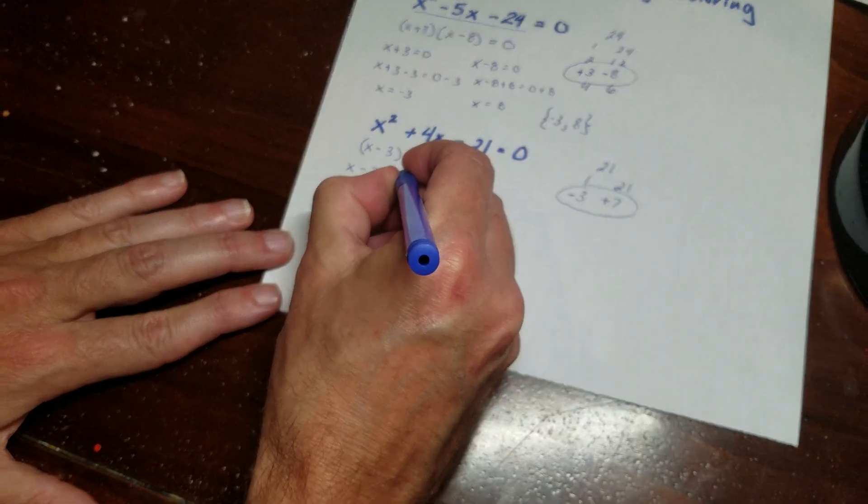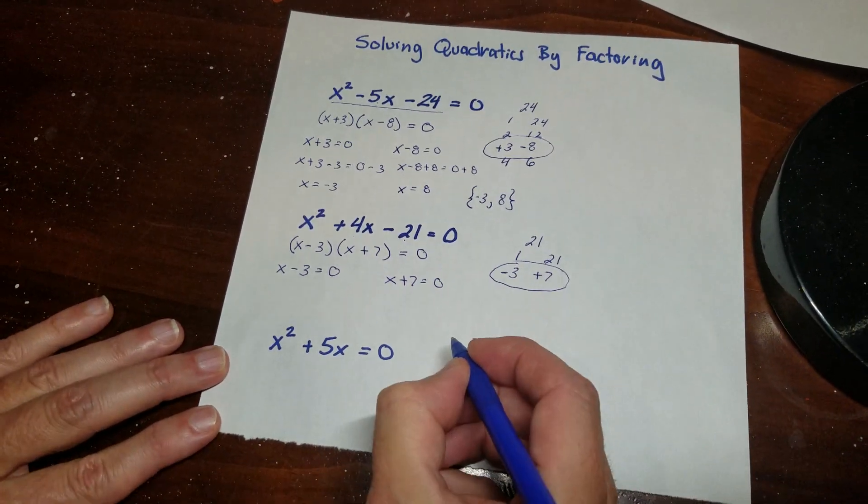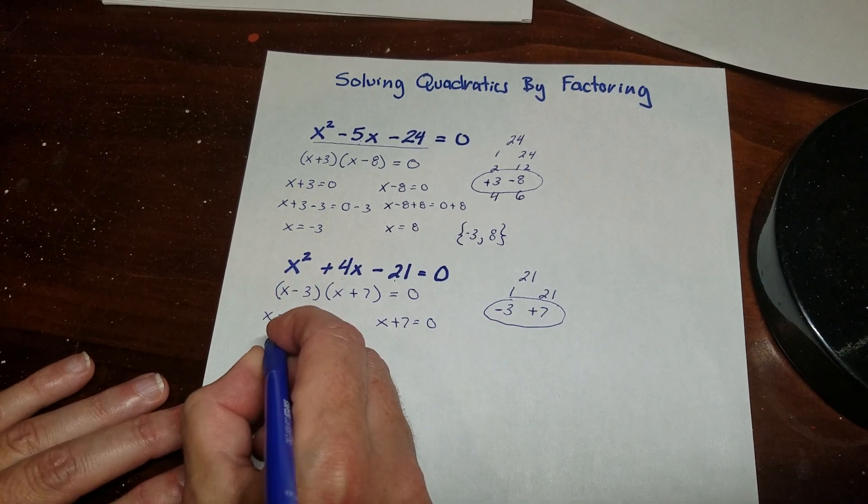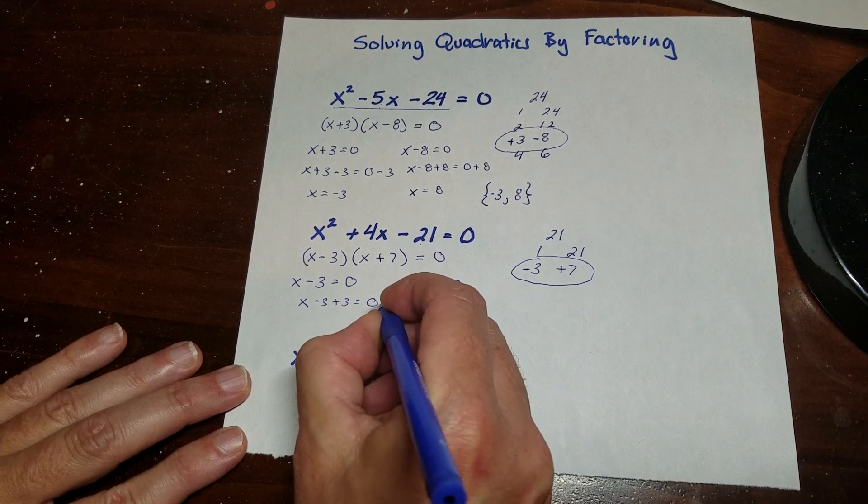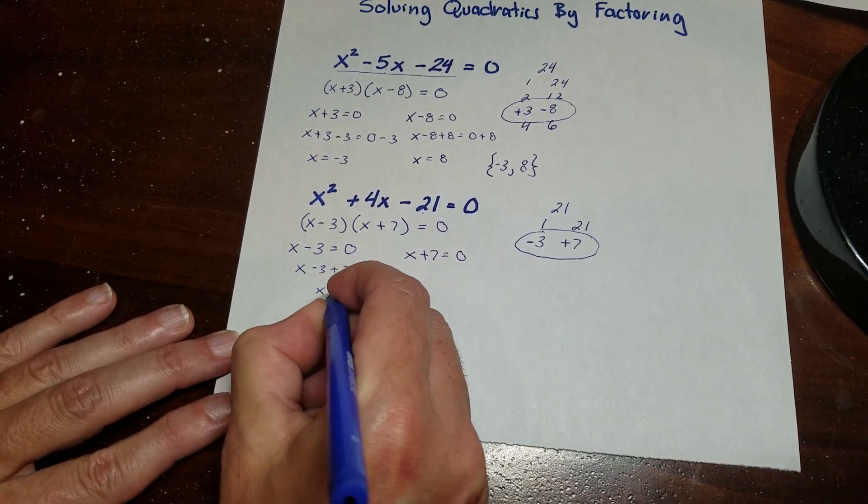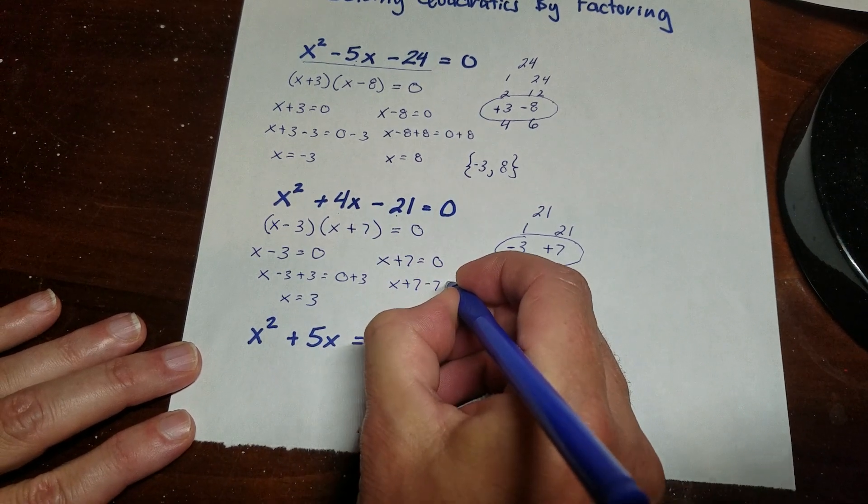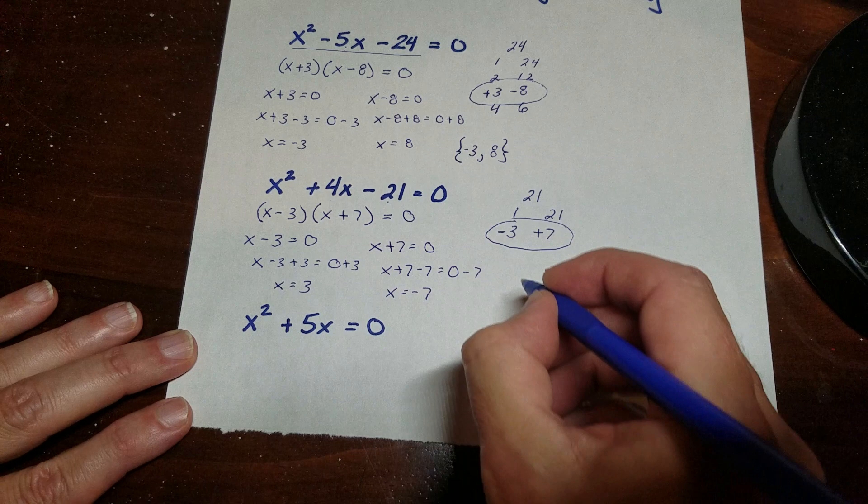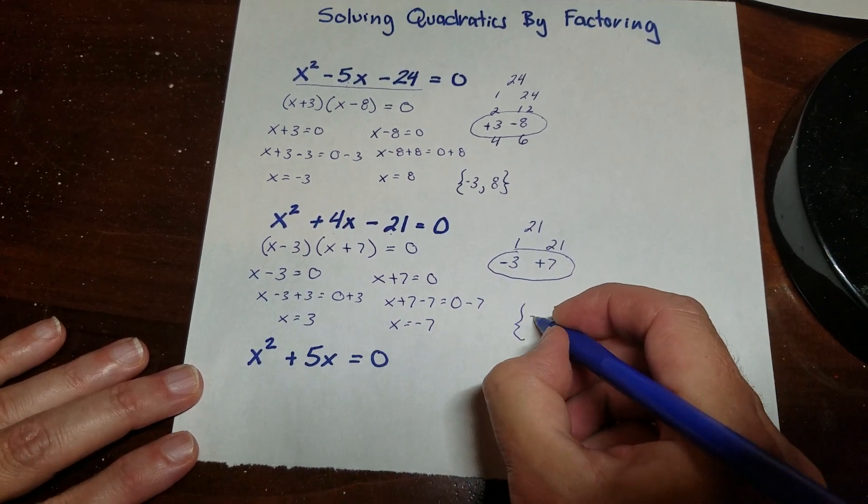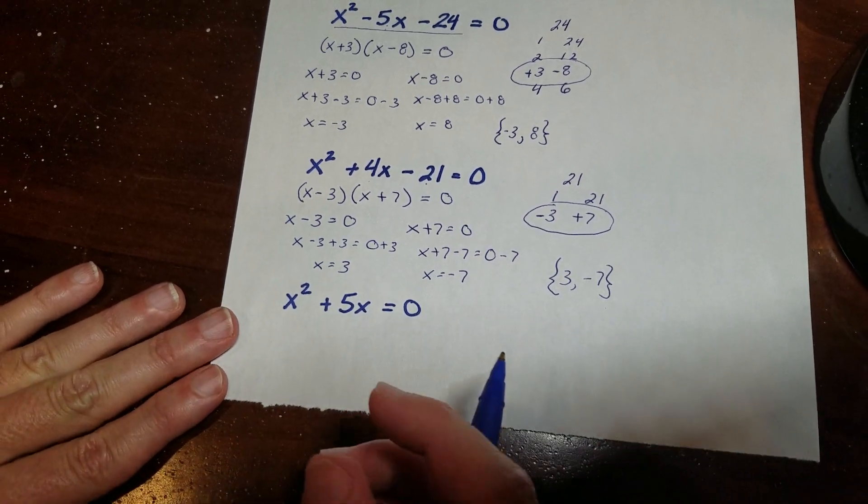So x minus 3 is equal to 0, and x plus 7 is equal to 0. And then I solve these equations. So if I do the additive inverse on this, this one's equal to 3, and that one's equal to negative 7. So my solution is 3 and negative 7.